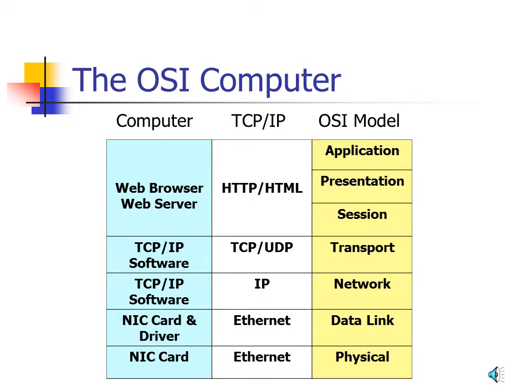At the physical layer, the network interface card provides Ethernet. At the data link layer, the network interface card and its associated software driver handle Ethernet. At the network layer, IP software is part of the TCP/IP software on the computer. Likewise, at the transport layer, TCP and UDP are also part of the TCP/IP software on the computer.